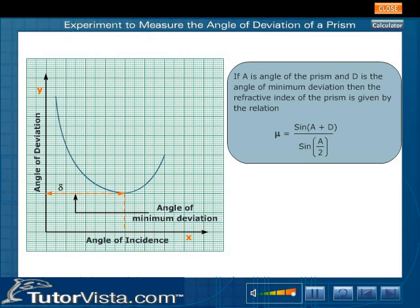If A is the angle of the prism and D is the angle of minimum deviation, then the refractive index of the prism is given by the relation: μ equals sine of (A plus D) divided by 2, divided by sine of A by 2.